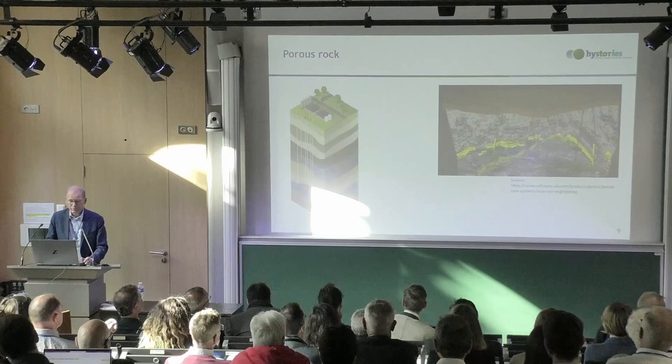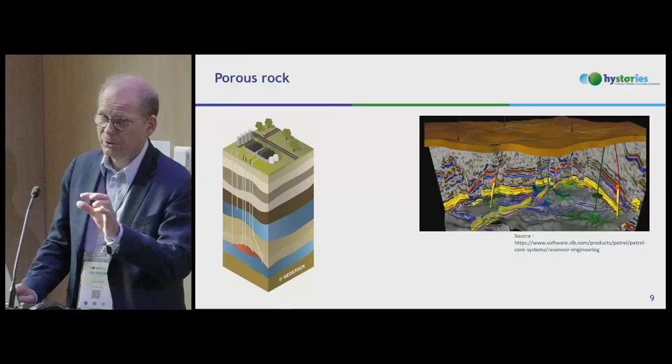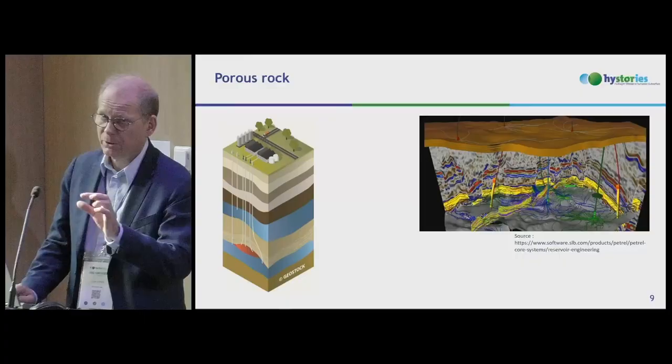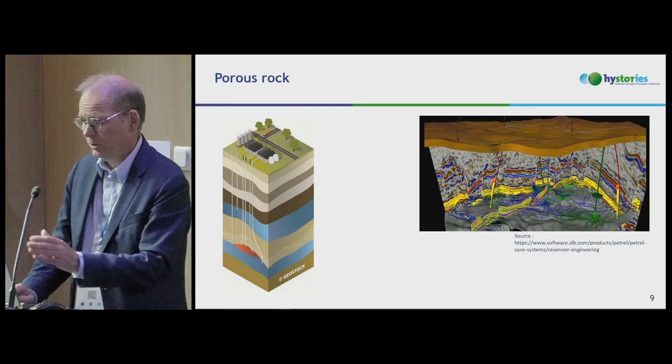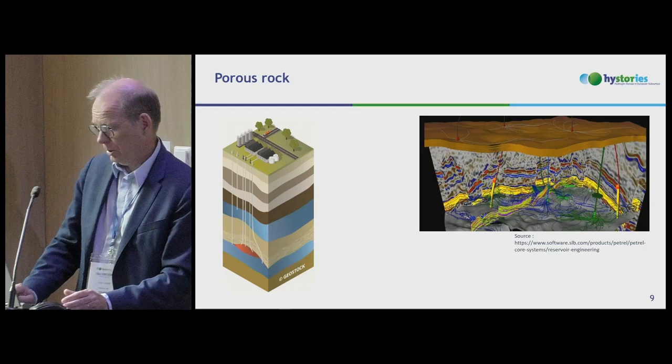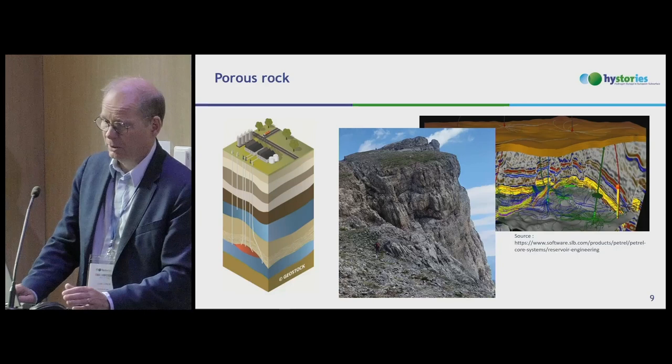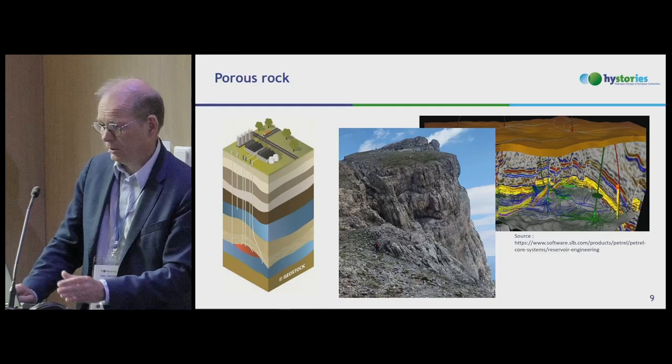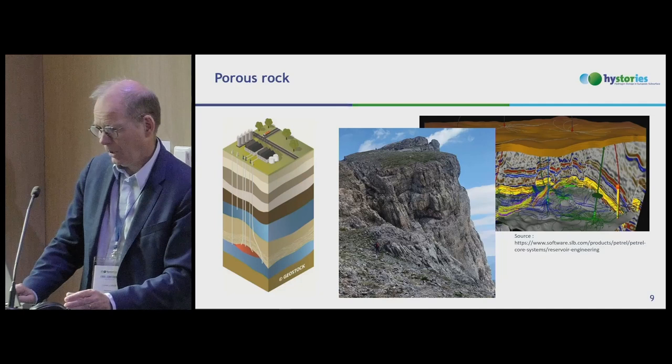Moving to porous rock: porous rock storage is done in layers with high porosity. This modeling shows what it looks like underground. An outcrop — a cliff of limestone — illustrates what we find underground, where we need high porosity to store hydrogen.